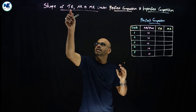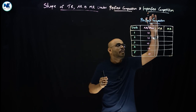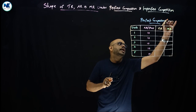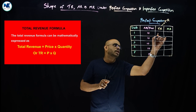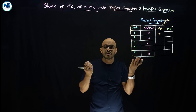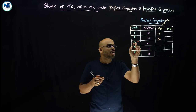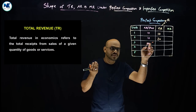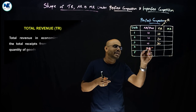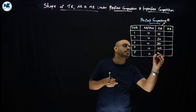Here we focus on TR, AR, and MR curves and their shape under perfect competition. Total revenue TR equals P times Q. When quantity is 1 and price is 10, TR is 10. When quantity is 2, TR is 20. When quantity is 3, TR is 30. When quantity is 4, TR is 40. When quantity is 5, TR is 50.